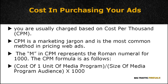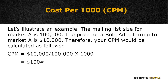When purchasing solo ads, you are usually charged based on cost per thousand — that's CPM. CPM is a marketing term and is the most common method in pricing web ads. It refers to the cost of a media vehicle reaching 1,000 people in audience. Some solo ad sites will charge you based on their fixed rate — for instance, $1,500 to advertise to a mailing list of a specific size. The M in CPM represents the Roman numeral for 1,000. The CPM formula is: cost of one unit of media program divided by size of media program audience, times 1,000. For example, if the mailing list size for Market A is 100,000 and the price for a solo ad is $10,000, your CPM equals $10,000 divided by 100,000 times 1,000, which equals $100.